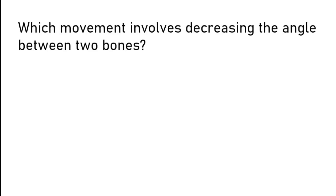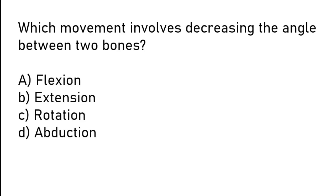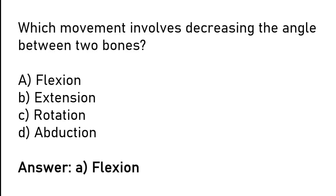Which movement involves decreasing the angle between two bones? Flexion, extension, rotation, or abduction. The correct answer is option A: flexion movement involves decreasing the angle between two bones.